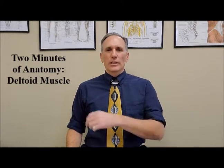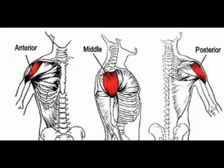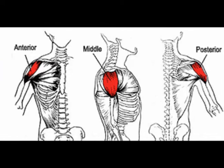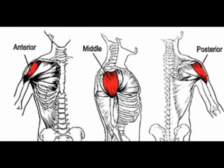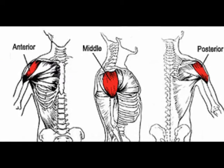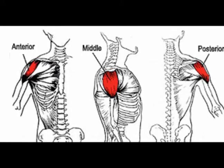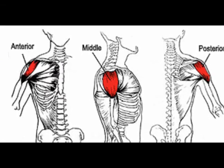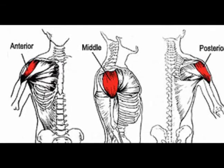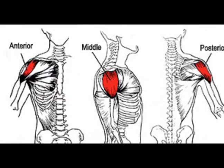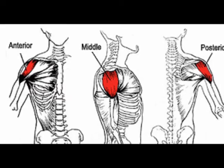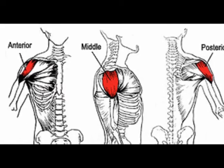The deltoid muscle is the shoulder muscle. The deltoid has three heads: the anterior head, the middle head — often called the lateral head in medical terms — and the posterior head.